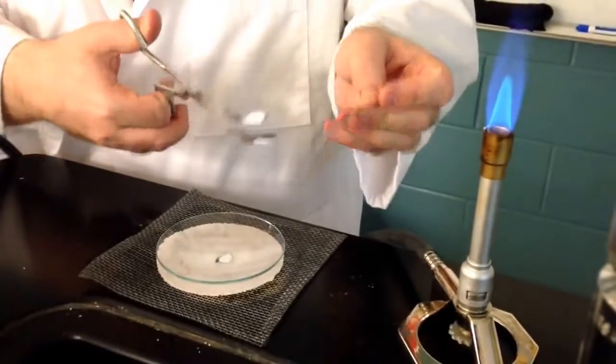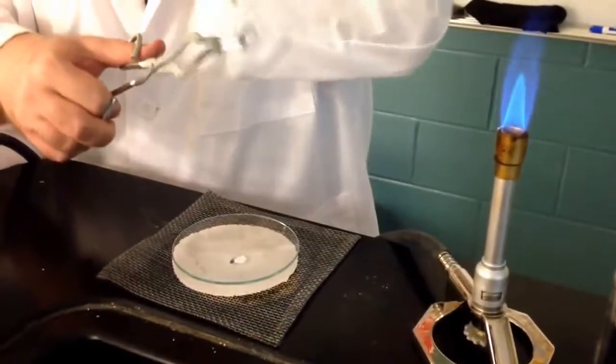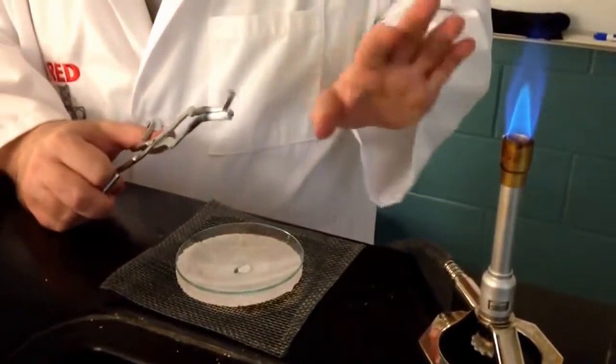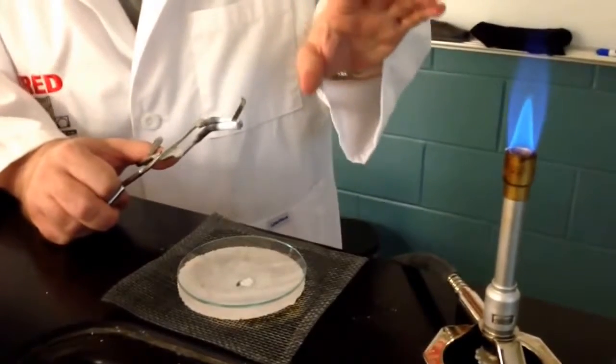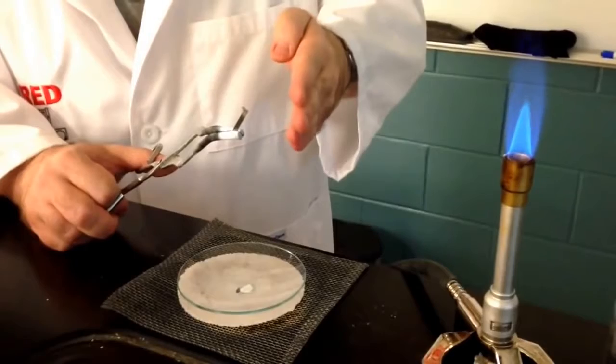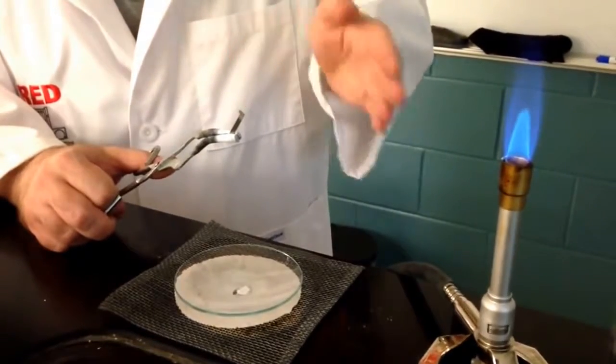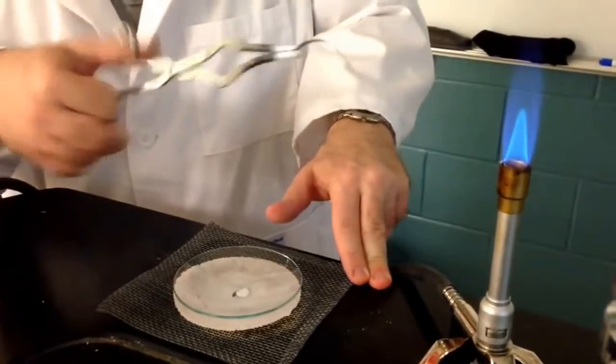We're going to use crucible tongs and hold the magnesium in the flame without directly looking. You never want to look directly at the burning magnesium. It's going to emit a very bright white light, so you want to make sure you look away so that you don't damage your eyes or vision. Make sure you look away from the flame as the magnesium burns.